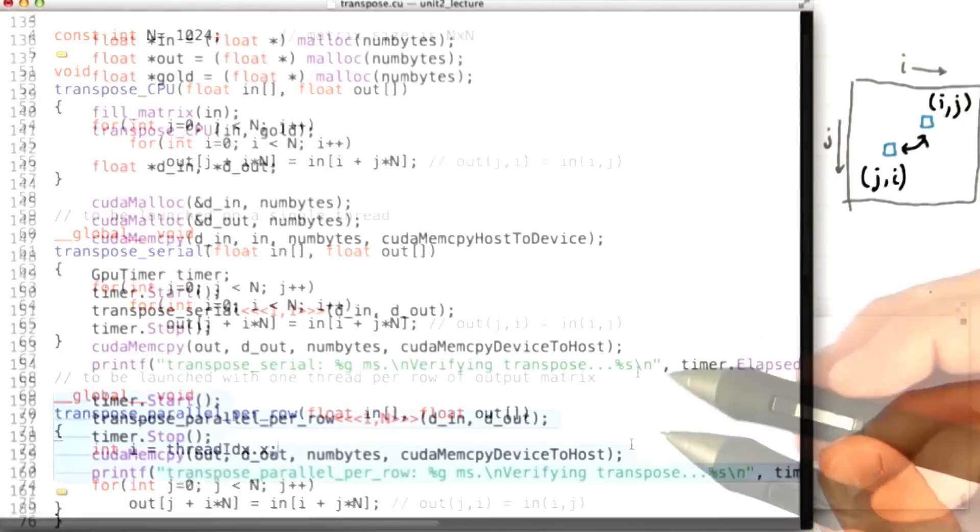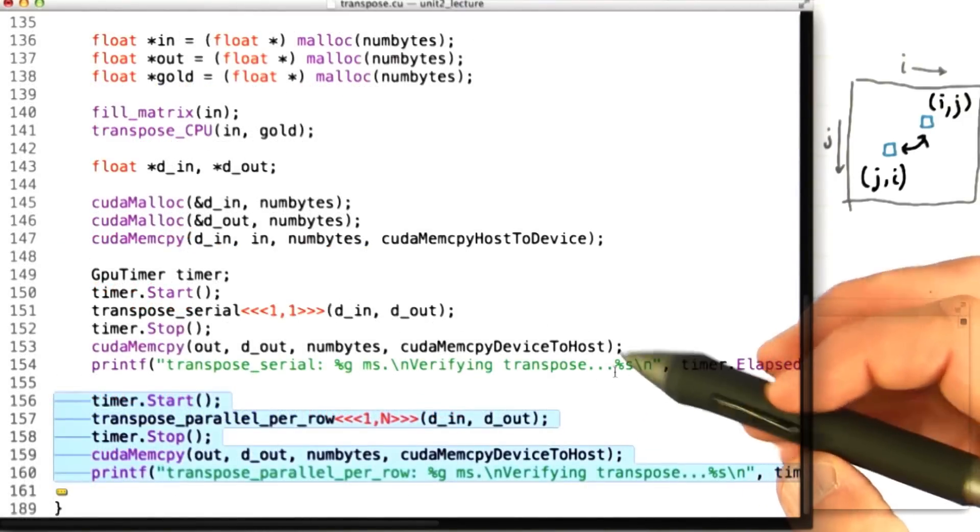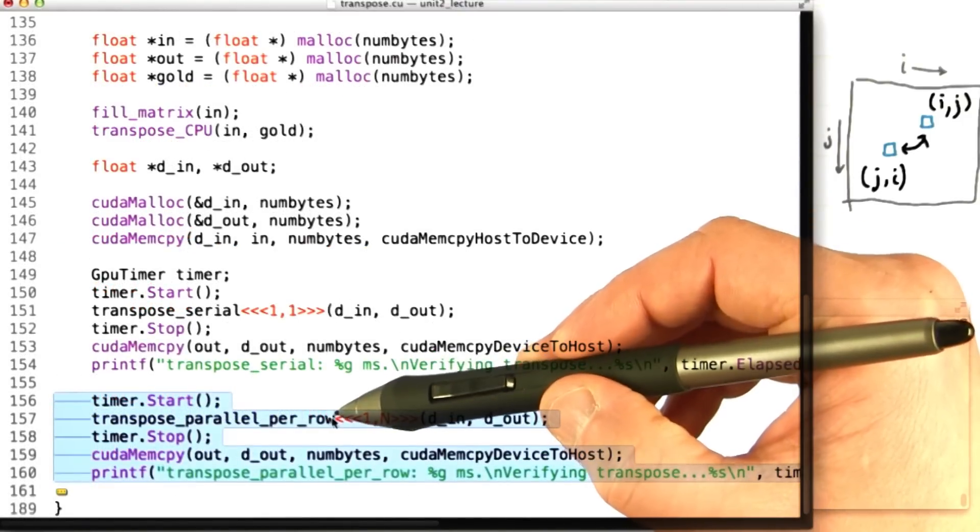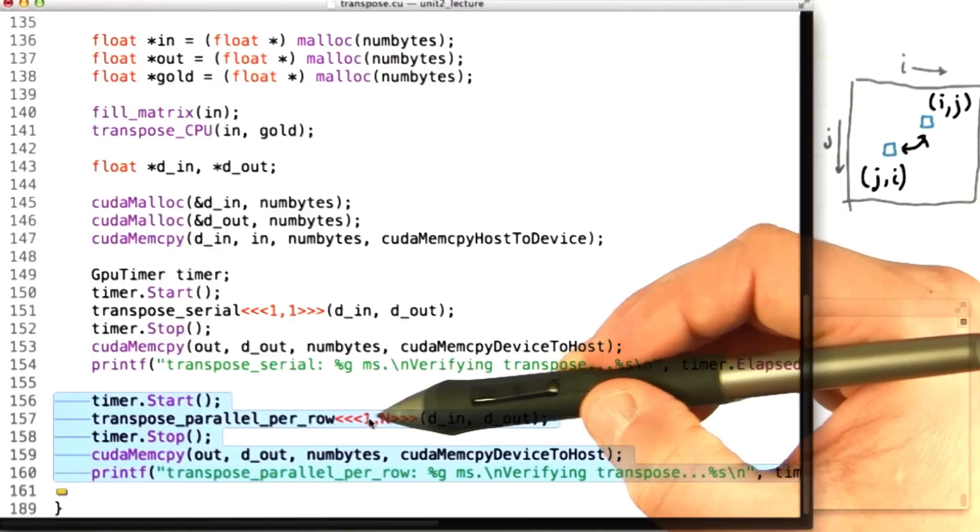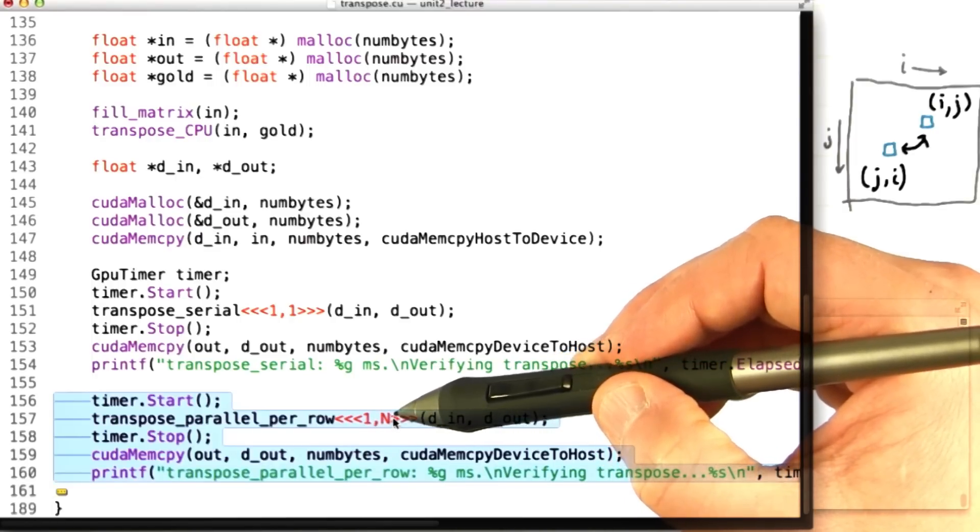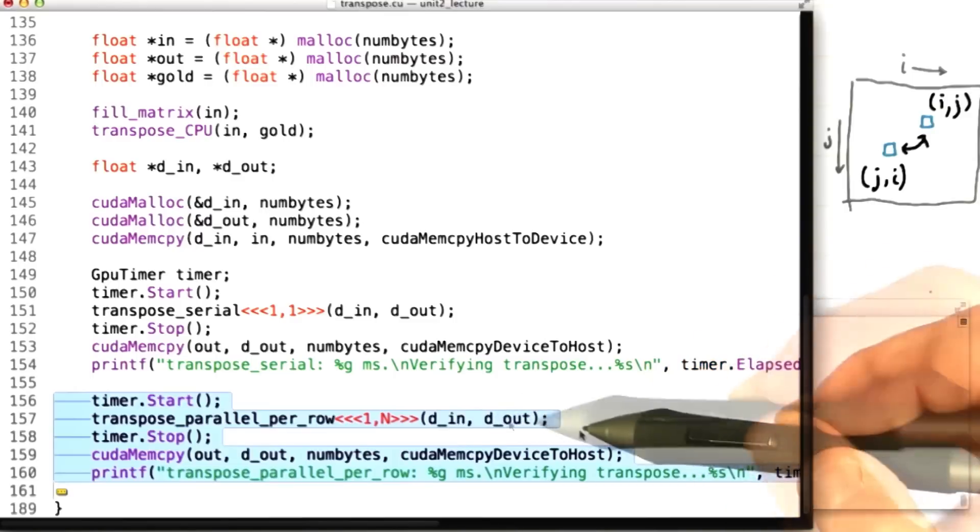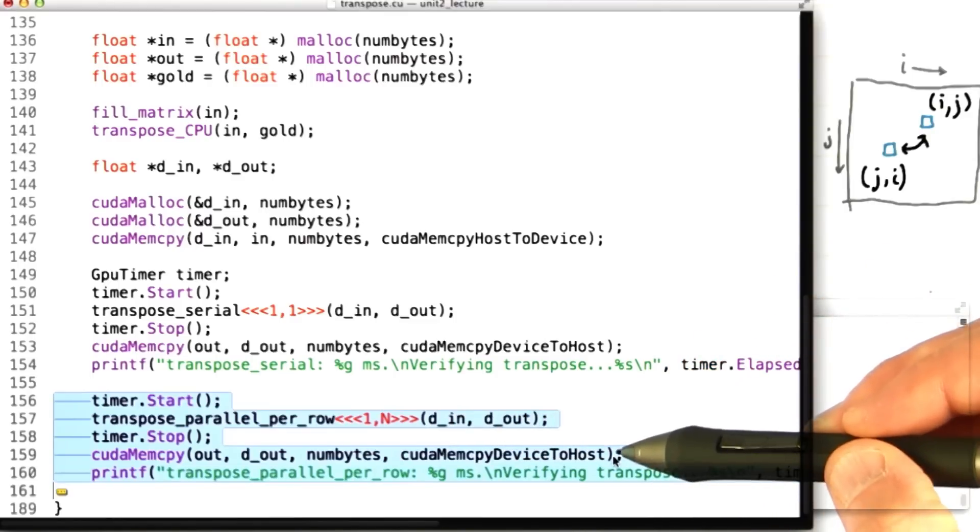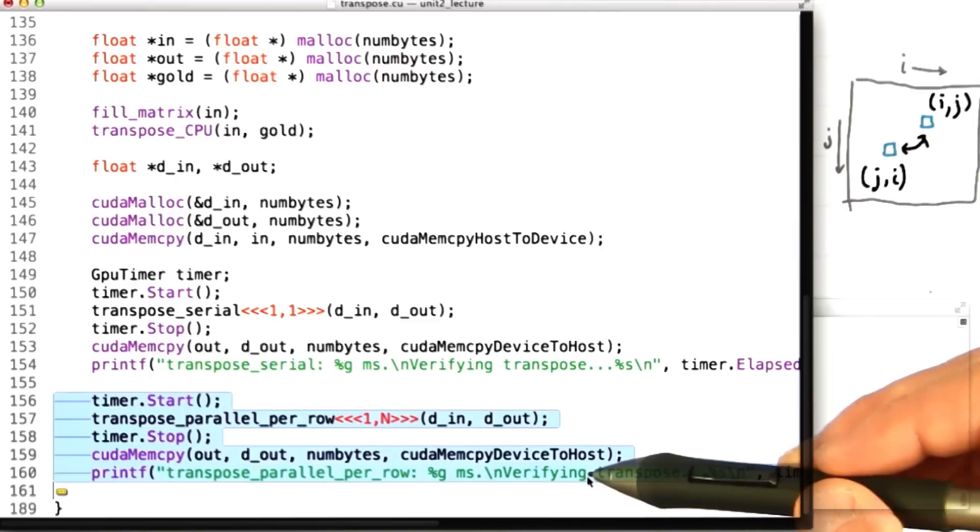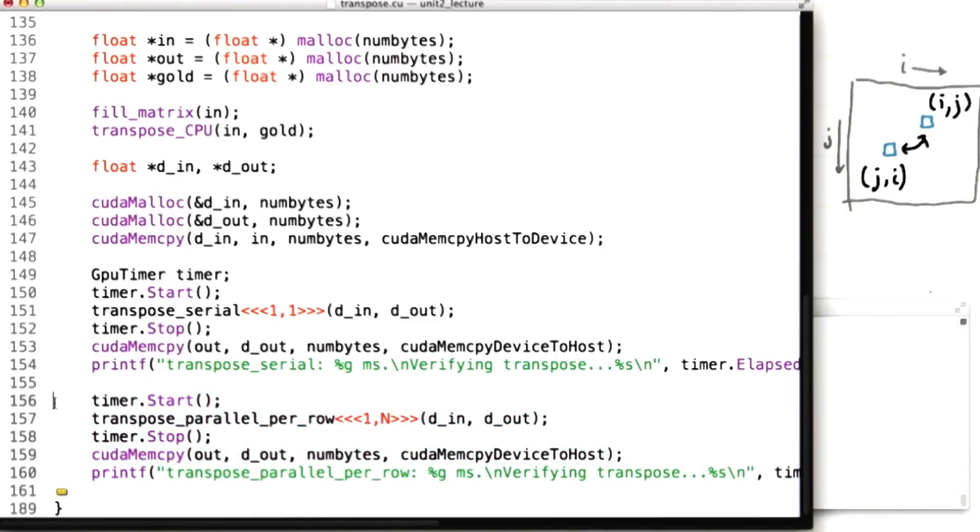Let's time this. Okay, so here's the code for calling our new function. We're going to launch the function transpose_parallel_per_row as a kernel. We're going to launch a single thread block consisting of n threads. Remember n is the size of our matrix, 1024 currently. We're going to pass in the input matrix, pull out the output matrix, copy it, and then we're going to print out the timing and verify it. Let's compile and run this code.